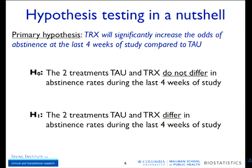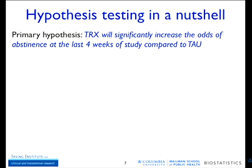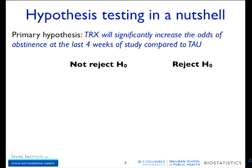In a two-sided hypothesis test, if treatment is not better than placebo and we don't reject the null hypothesis, that's the correct answer — not exciting, but an answer. What can happen, however, is that treatment is not better than placebo, but by random chance our subjects line up so that we actually reject the null hypothesis. In that case we have a type I error — the treatment was found erroneously superior to treatment as usual.